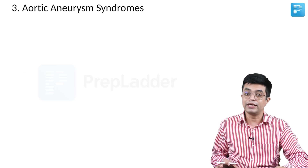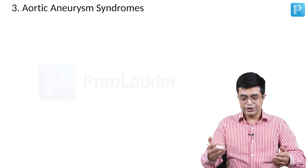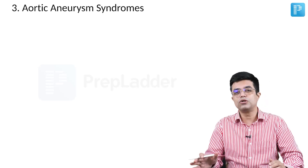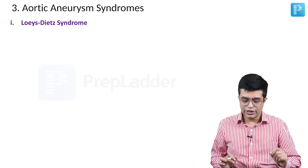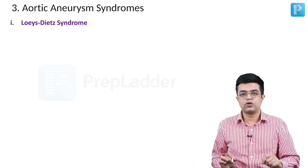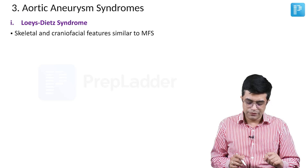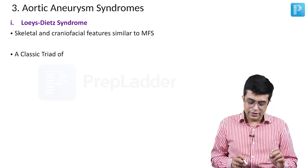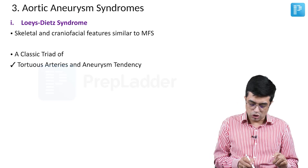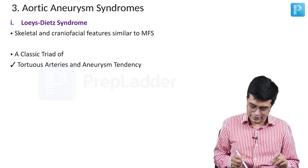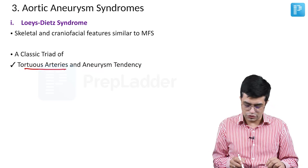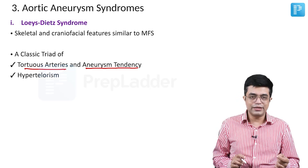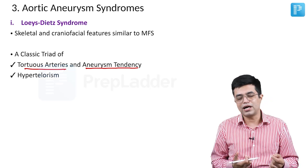Aortic aneurysm syndromes may or may not have marfanoid morphological features, but they will all have aortic aneurysm and aortic dissection, managed similarly to Marfan syndrome. The first is Loeys-Dietz syndrome (LDS). It comprises a classic triad: tortuous arteries with aneurysm tendency — the large vessels have a tendency to undergo aneurysm formation including mainly aortic aneurysm; secondly, hypertelorism — increased gap between the two eyes.